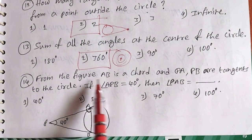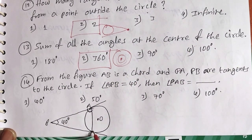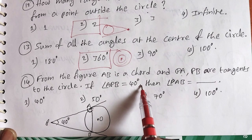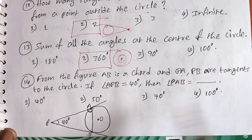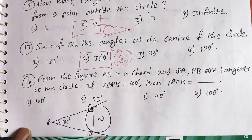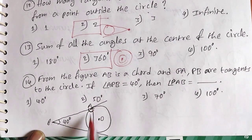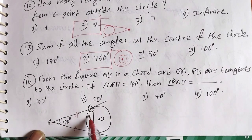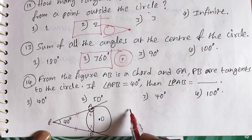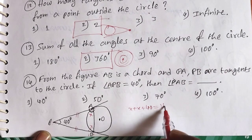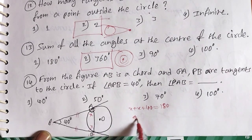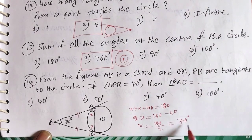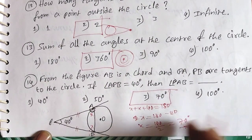Question 14: In the figure, AB is a chord, and PA and PB are two tangents. If angle APB is equal to 40 degrees, then angle PAB is equal to how much? The length of the two tangents from an external point is equal, so triangle PAB is isosceles. Let angle PAB equal angle PBA equal x. Then x plus x plus 40 equals 180. So 2x equals 140, and x equals 70 degrees. The third option, 70 degrees, is the answer.